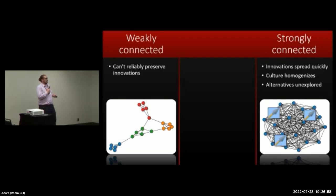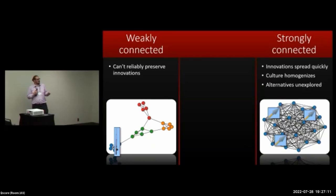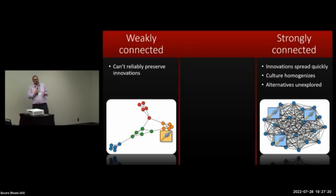Conversely, if a population is very weakly connected, it can be difficult to reliably preserve traits. For example, an individual in the blue subgroup invents a fishing rod, but they die and get replaced before this information can spread because the network is very sparsely connected. Sometime later, somebody in the orange group invents a fishing spear. This time they're a little luckier, they stick around longer, transmission is able to occur, and this spreads throughout the population.